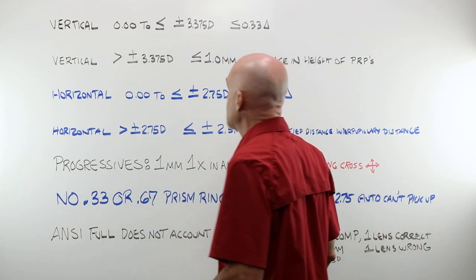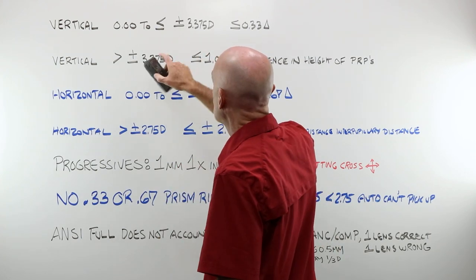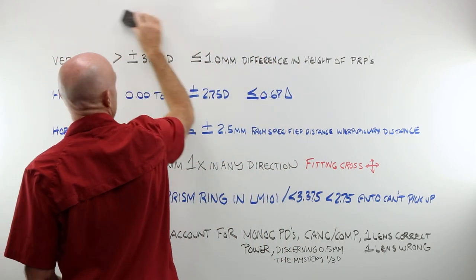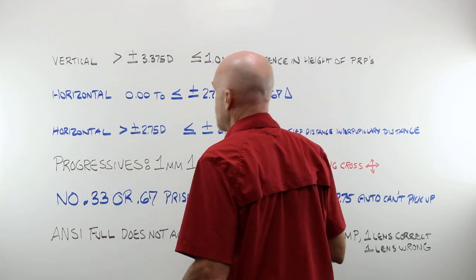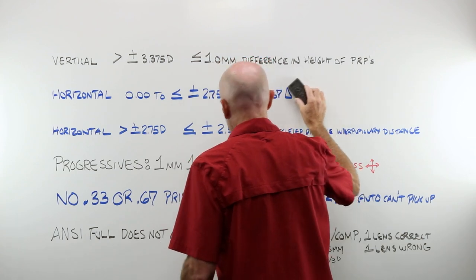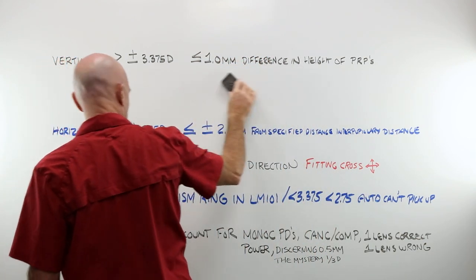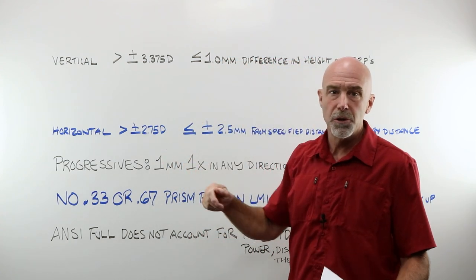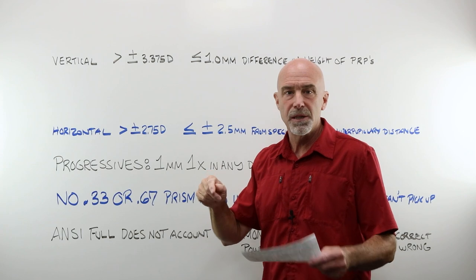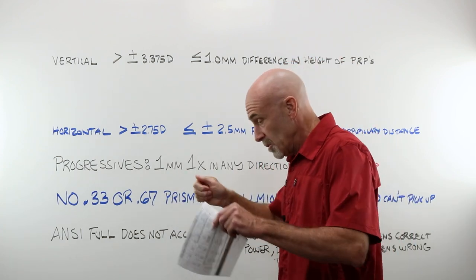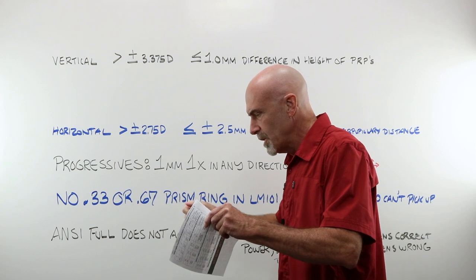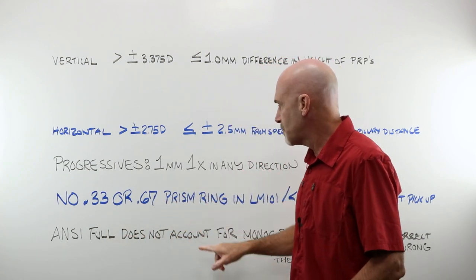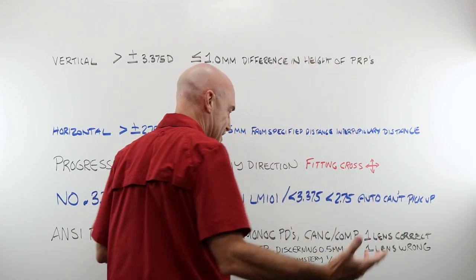Now, let's cut to the chase here. Vertical, less than 3.375 diopters. We're not even going to look at that one because, well, it doesn't make any sense. We're not going to look at this one either. And why doesn't that make sense? Because it's built off of an obscure idea where you're marking and then tapping and then marking again and then taking out, looking inside the lens meter and moving it over to an imaginary 0.33 or 0.67 prism ring in the lens meter that doesn't exist.